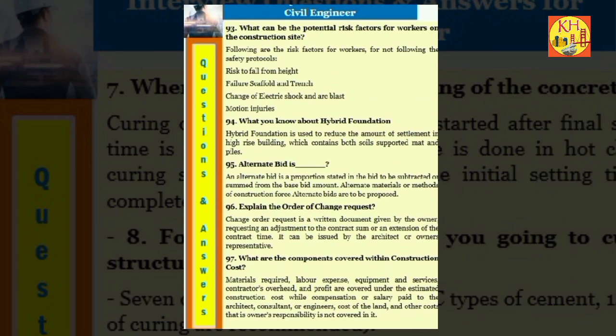Question 94: What you know about hybrid foundation? Hybrid foundation is used to reduce the amount of settlement in high rise building, which contains both soils supported mat and piles. Question 95: Alternate bid is an alternate bid stated in the bid to be subtracted or summed from the base bid amount. Alternate materials or methods of construction force alternate bids are to be proposed.